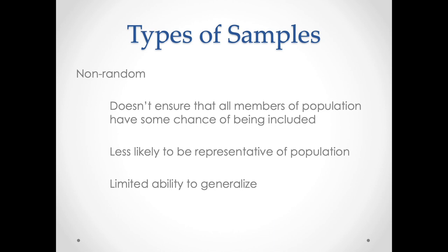A snowball sample starts with something pretty small — imagine a snowball rolling down a hill, picking up more and more snow, getting bigger and bigger. The problems with snowball sampling are obvious: you end up existing within a small set of peer networks that are not generalizable to the population, but they at times may be a necessity.